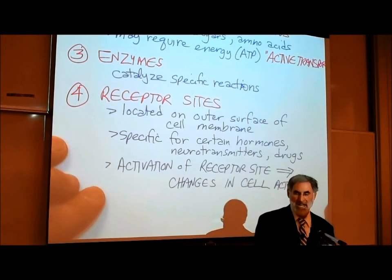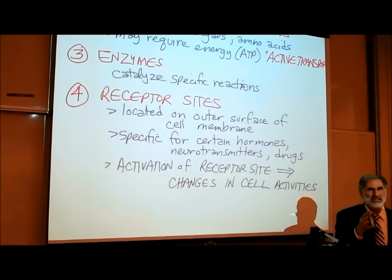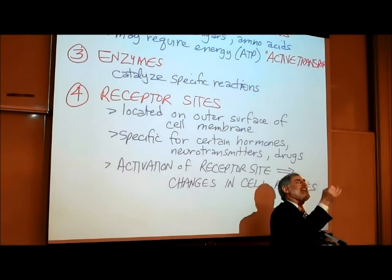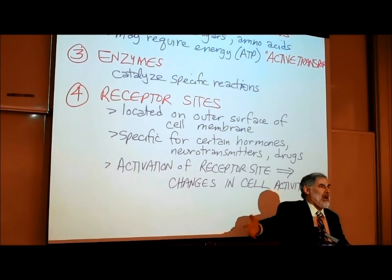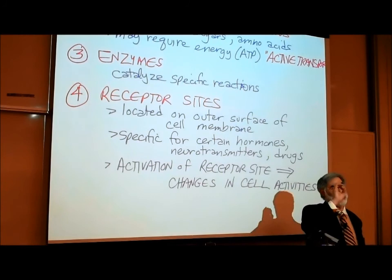This also answers a common question: if somebody takes a medication for their heart, how does the drug know to go to their heart? When you swallow something, it's absorbed into your bloodstream and carried everywhere in your body. But that drug can only affect those cells that have a receptor site for that drug. If they design a drug that attaches to a receptor site on heart cells, it will only affect heart cells.